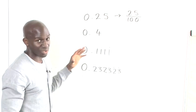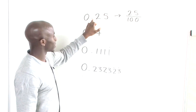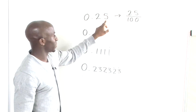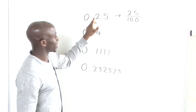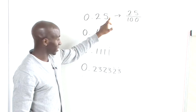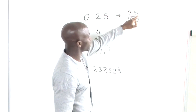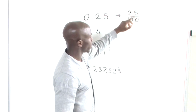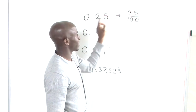Just to recap on what happened there: if we wanted to move this decimal point back past the 25, we would need to multiply it by 100, which has two zeros — one jump and then another jump. So to go back, we would need to divide it by 100. That's how to convert this back.